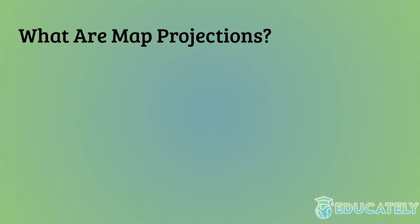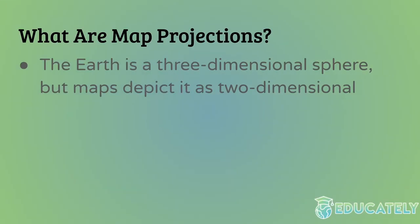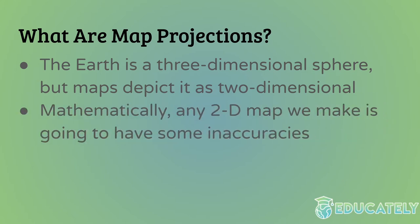So first, what are map projections? You have to know that the Earth is a three-dimensional sphere, or close to it. But maps are depicted as two-dimensional, like on a flat surface. As a result, because the Earth isn't two-dimensional — it isn't flat — any 2D map we make of the Earth is going to have some inaccuracies. It's going to be distorted in some way. We can't make a perfect two-dimensional map. It's mathematically impossible.